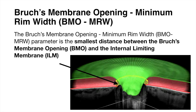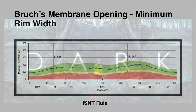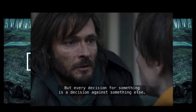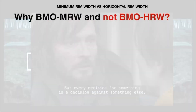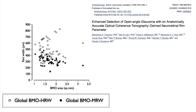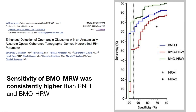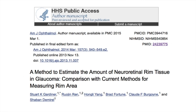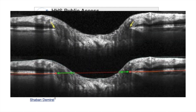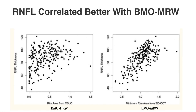Bruch's membrane opening minimum rim width follows the ISNT rule — it is thicker in the inferior and superior quadrants. BMO minimum rim width was chosen over horizontal rim width because Chauhan et al. revealed that BMO MRW yielded higher diagnostic performance than BMO horizontal rim width. Sensitivity of BMO MRW was consistently higher than RNFL and BMO HRW. A study on glaucomatous neuroretinal rim tissue revealed that mean deviation of visual fields and retinal nerve fiber layer thickness both correlated better with BMO MRW than with BMO HRW.